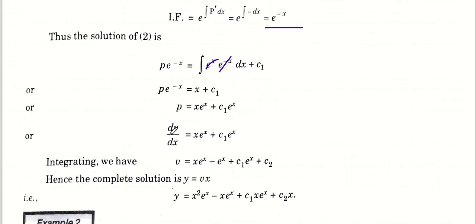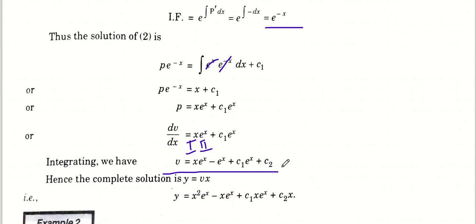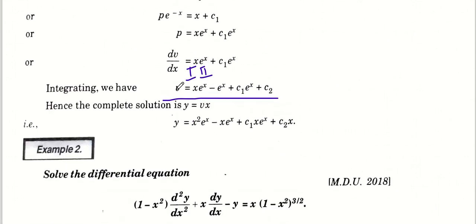x·e^x का integration by parts से करेंगे: x को first function, e^x को second function मानेंगे। C1 as it is रहेगा, e^x का integration e^x, plus C2 constant of integration। अब Y = V·U = (result)·x। दोनों को multiply करने पर required solution आ गया।